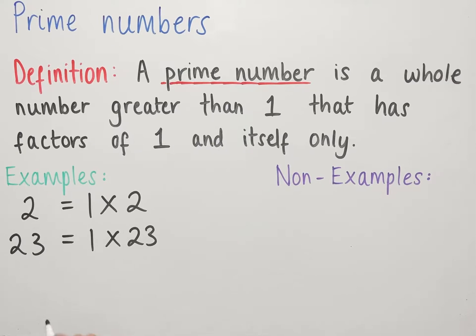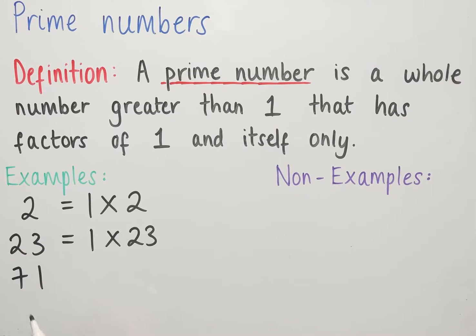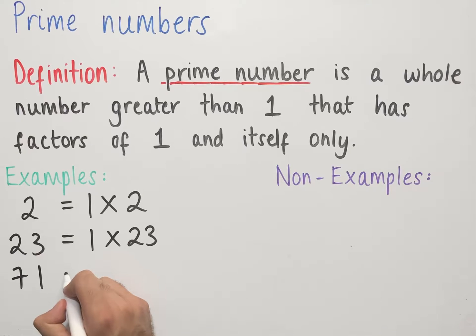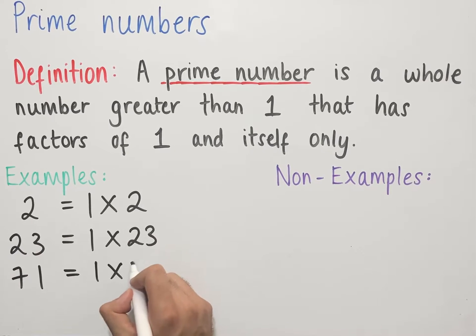If we look at 71, the number 71 is also prime since it's a whole number, it's greater than 1, and it only has factors of 1 and itself. So 71 can only be written as 1 times 71 or 71 times 1.